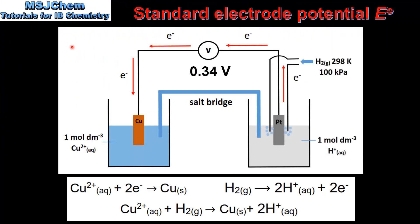In the next example we have a copper half cell connected to a standard hydrogen electrode. The reading on the voltmeter shows 0.34 volts. The electrons flow from the anode, which in this case is the standard hydrogen electrode, to the cathode, which is the copper half cell.